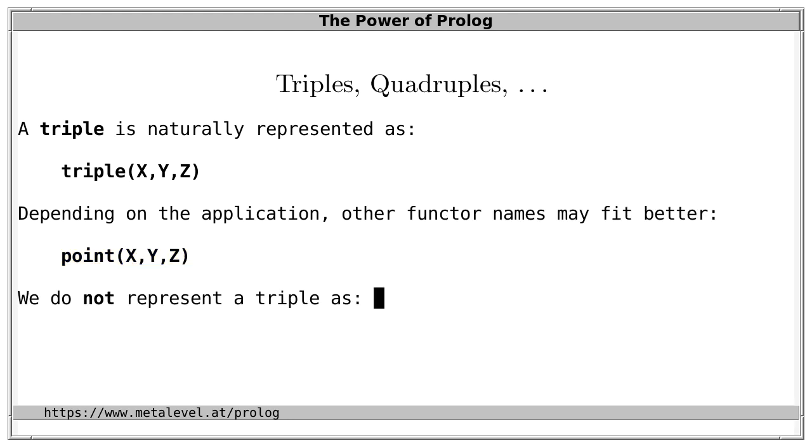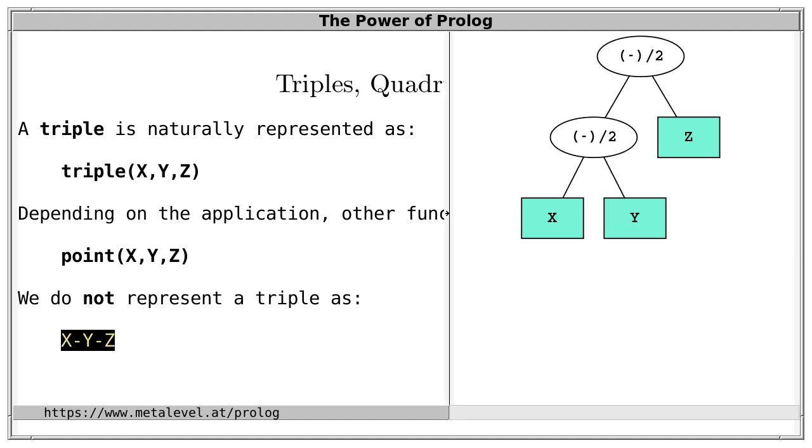Even though it may at first be tempting, we don't represent the triple as x dash y dash z. Why? That's because this is a pair. A pair where the first argument, that is the key, is a pair, and the second argument, that is the value, is the variable z.